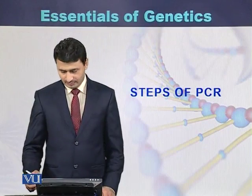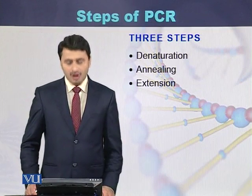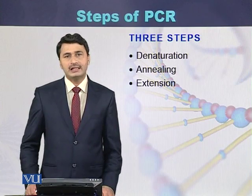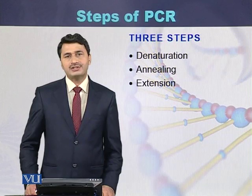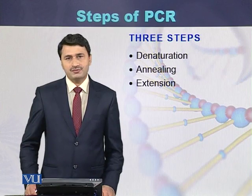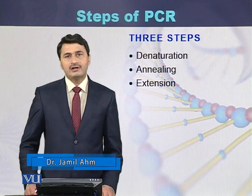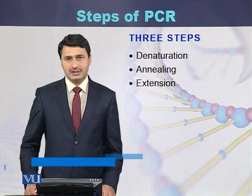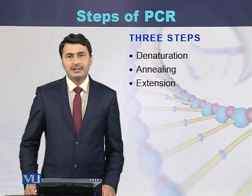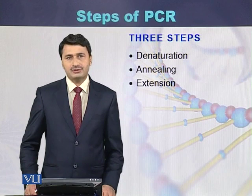There are three main steps of PCR: denaturation, annealing, and extension, which is also called elongation. In denaturation, double-stranded DNA is converted into single-stranded. In annealing, primers bind to the single-stranded DNA. In extension, DNA polymerase extends a newly synthesized strand that is complementary to the template strand.